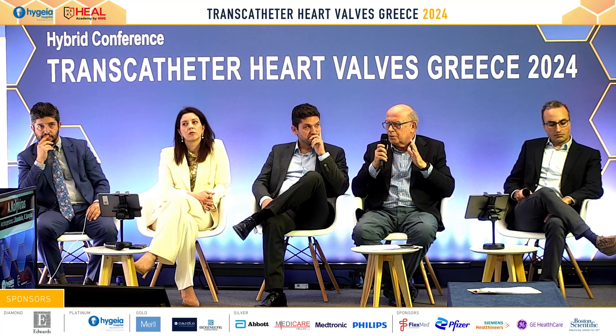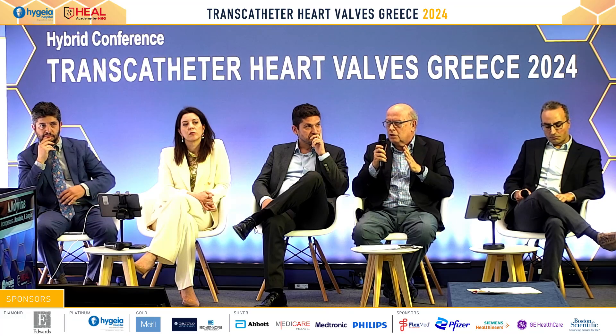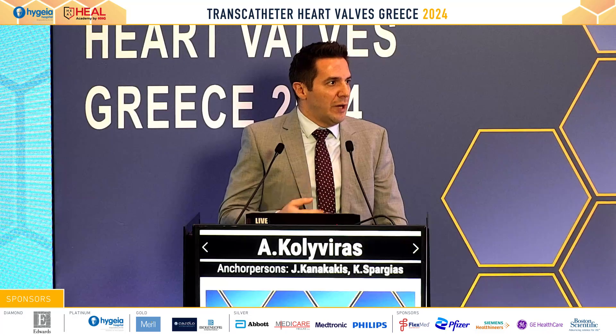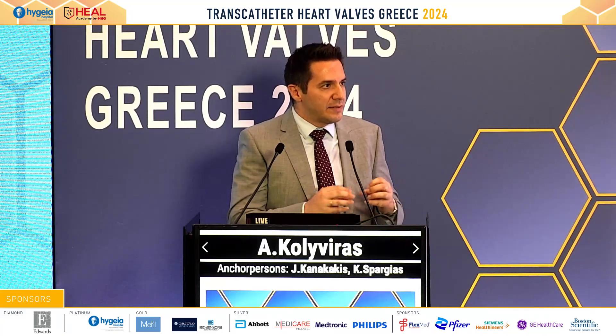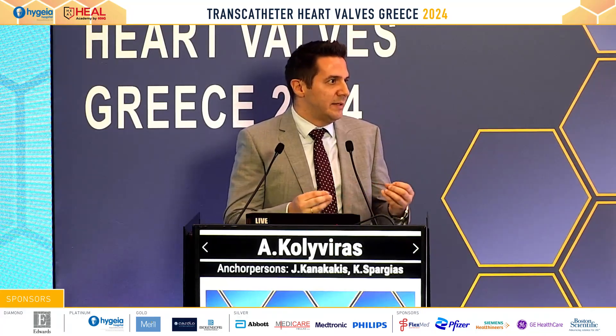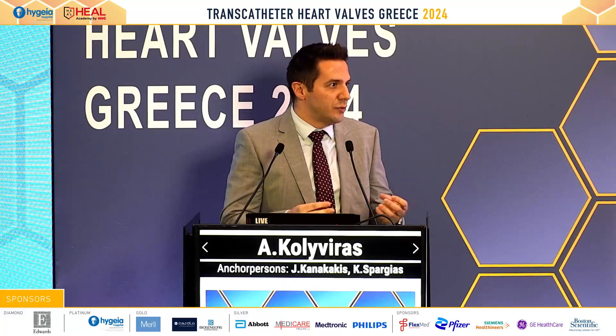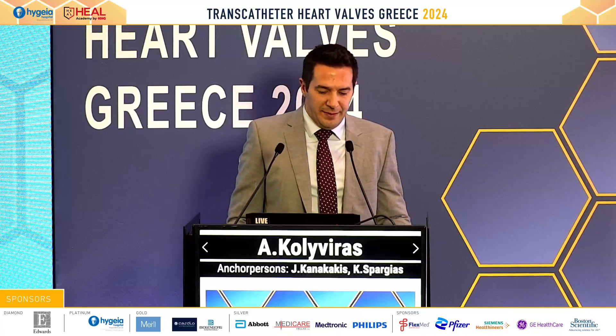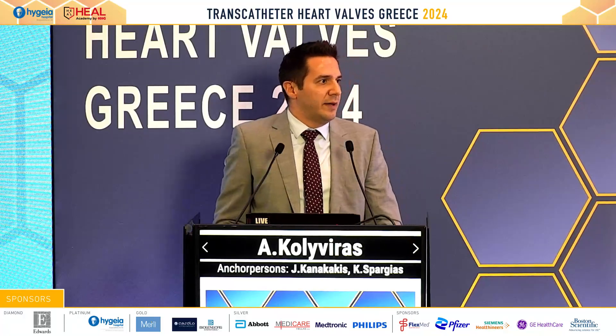Some interventionalists use from the beginning one ProGlide and one Angioseal — not as a bailout, but from the beginning two ProGlides and Angioseal. Using the multi-close algorithm, we are safer, because if we use two ProGlides and one Angioseal, we don't know if we cause damage to the vessel, a dissection, or an occlusion. We should not be so aggressive with the arteriotomy, and we should check everything at the beginning.